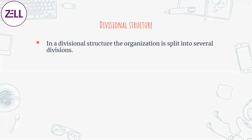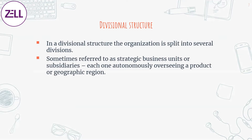Divisional structure is just like functional structure but here we split into separate divisions. Separate divisions can be multiple products — like in Hindustan Unilever, one division is responsible for biscuits, another for drinks. We call these strategic business units or subsidiaries. You can also split by geographic locations — one whole team responsible for operations in India, another for the Middle East. Under each division, naturally you will have someone doing marketing, sales, and operations, but the core structure is broken into divisions.